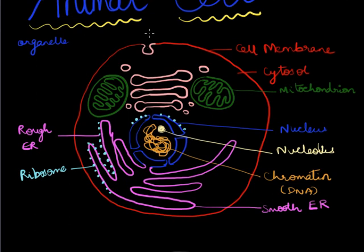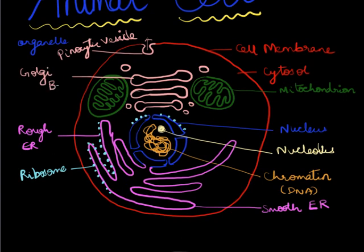And whatever substances are inside are just sent out. Okay, so this vesicle is called as the pinocytic vesicle, and this is the golgi body or the golgi apparatus.